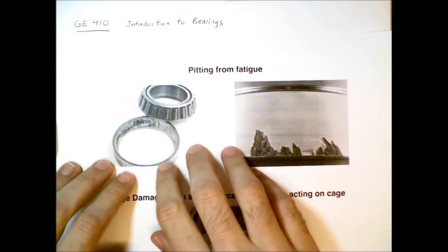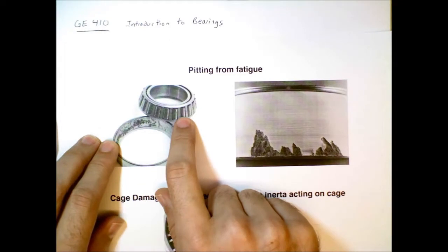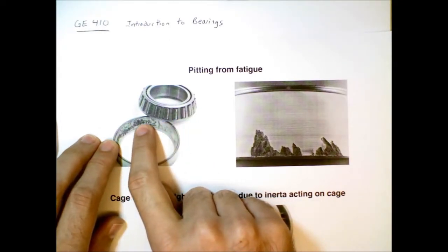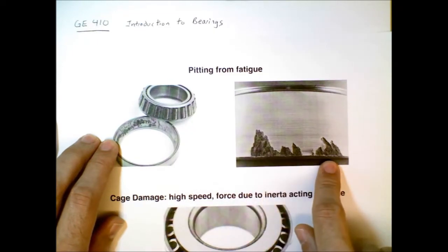When the surface is fatigued by repeated contact and force from the rollers, then little pieces of the surface can break off. And this is what we call pitting. So here's a little bit closer view of pitting from fatigue.